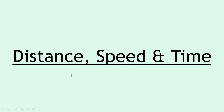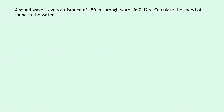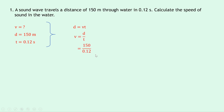The first four examples look at the relationship between distance, speed and time. Question one says a sound wave travels a distance of 150 meters through water in 0.12 seconds. Calculate the speed of sound in the water. Writing down what we know: we're trying to find speed, distance is 150 meters, and time is 0.12 seconds. No prefixes, so we're good to go. Our equation is d = vt, so rearranging by dividing both sides by t gives v = d/t. Substituting in: 150 divided by 0.12 gives 1250 meters per second. Notice this is not too far off the 1500 meters per second stated in the table in your datasheet.